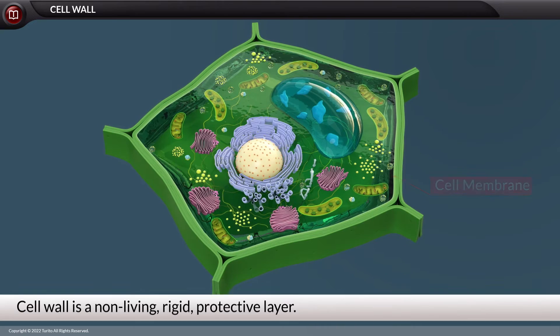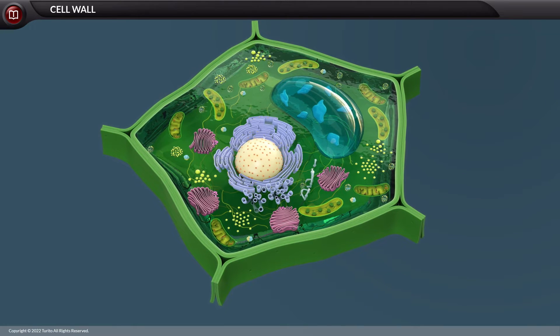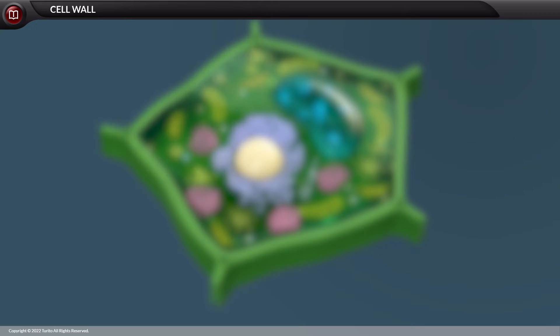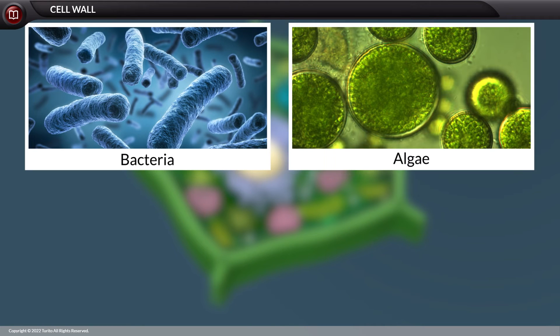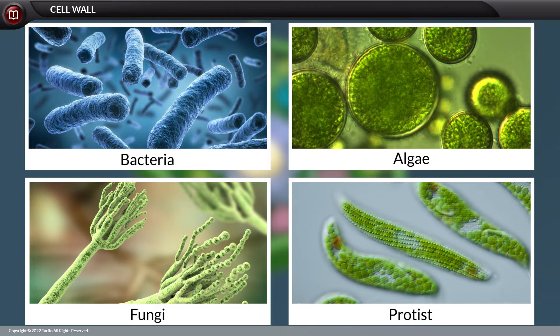The cell wall is present not only in plant cells, but also in cells of bacteria, algae, fungi, and protists.